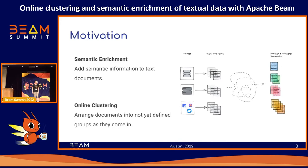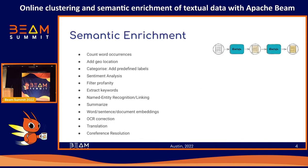I tried to illustrate this on the right-hand side. We might have different sources — databases, servers that are producing documents, or user-generated content through social media and so on. We have a lot of different sources and text documents. Then something happens with them — this semantic enrichment and online clustering — and we end up with documents which are more semantically enriched and grouped into certain groups, but we don't know the groups beforehand.